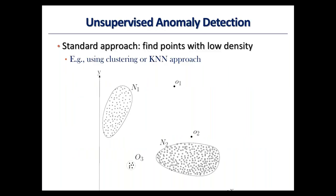For anomaly detection, here is a quick tutorial. If a data point is represented by a k-dimensional feature vector, we want to see whether some data points are far away from dense areas. A naive solution is to first do clustering based on k-dimensional features — for example, residence houses in some area form dense clusters. We compute the distance of data points to the dense area center, and identify that O1 and O2 are actually far away from all dense areas, so we define them as anomalies.